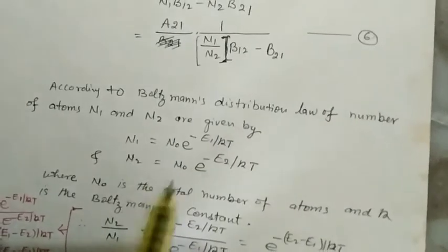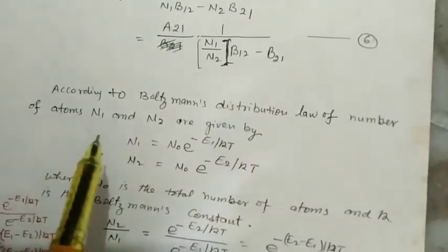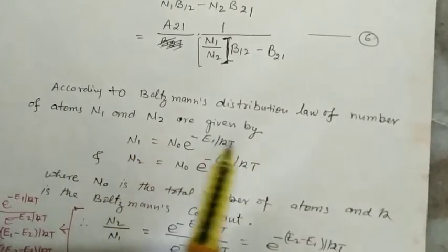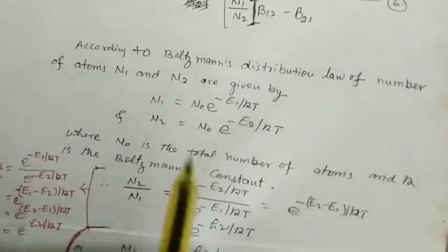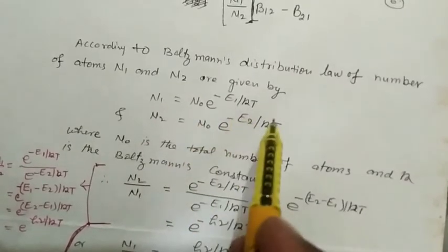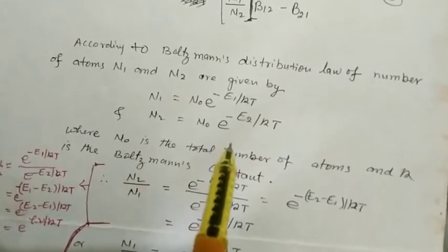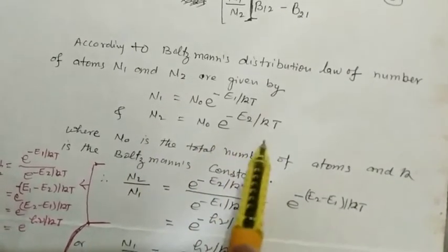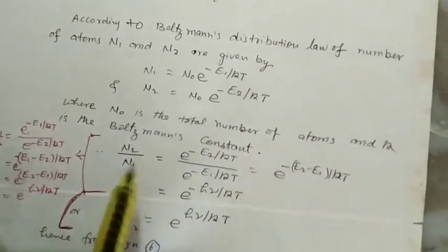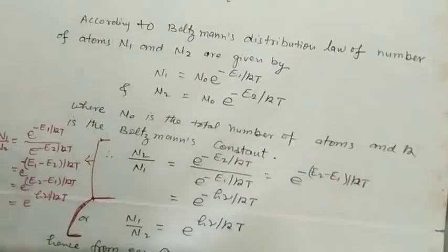According to Boltzmann distribution law of number of atoms, N1 and N2 are given by N1 = N0·e^(-E1/kT) and N2 = N0·e^(-E2/kT), where N0 is the total number of atoms and k is the Boltzmann constant.